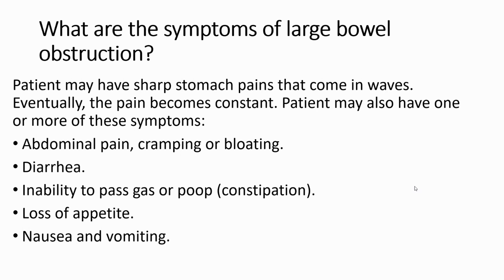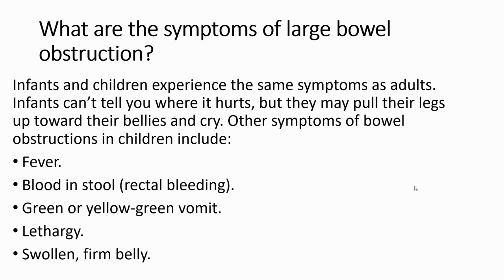Symptoms and signs of large bowel obstruction: patients may have sharp stomach pain that comes in waves; eventually the pain becomes constant. Patients may also have abdominal pain, cramping, diarrhea, inability to pass gas or stool due to constipation, loss of appetite, nausea, and vomiting. Infants and children experience the same symptoms as adults but can't tell the doctor where it hurts; they may pull their legs up towards their belly and cry. Other symptoms in children include fever, blood in stool, rectal bleeding on digital examination, green or yellow-green vomiting, and a swollen and firm belly.